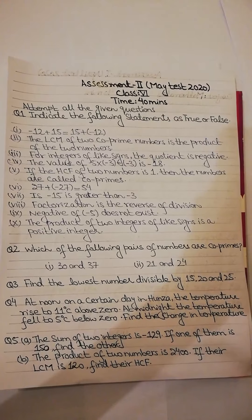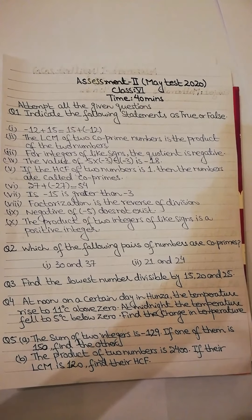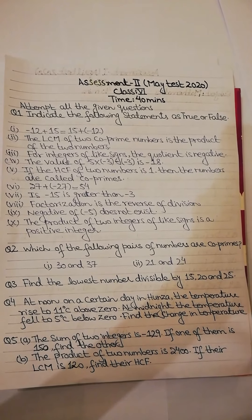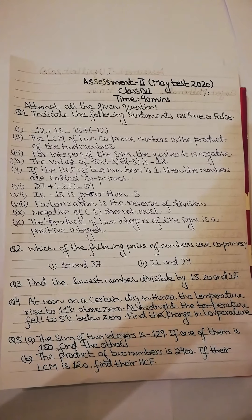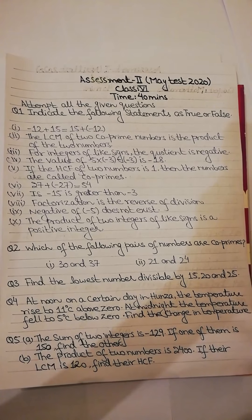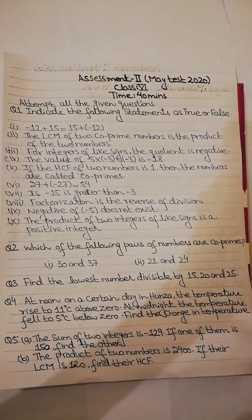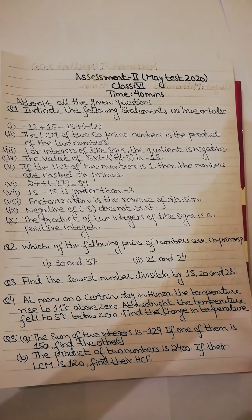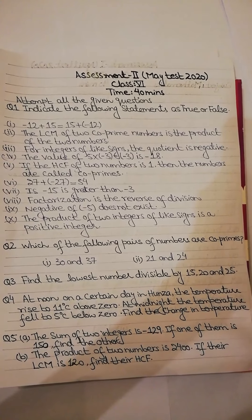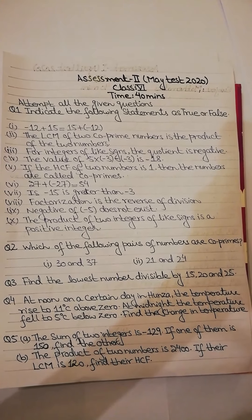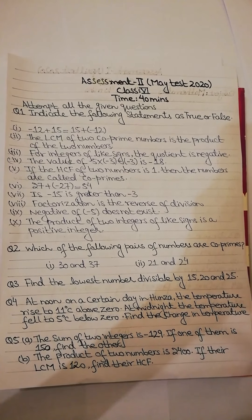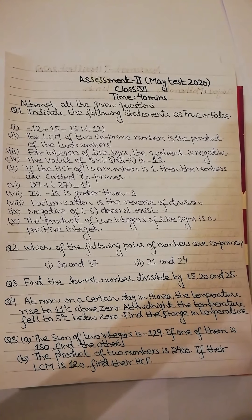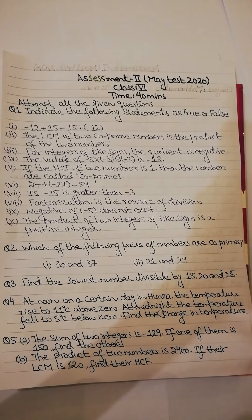All right, now question number 4 is, at noon on a certain day in Hunza the temperature rise to 11 degree above zero. At midnight the temperature fall to 5 degree below zero. Find the change in temperature. Okay, now you have rise in temperature given which is 11 degree centigrade, and at midnight the temperature is 5 degree below zero, and you have to find out the change in temperature.